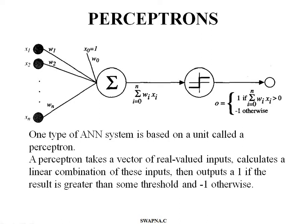Good morning everyone. This is Fatma. Welcome to the machine learning class. Today our topic is Passive Drops. One type of artificial neural network system is placed around a unit called Passive Drop.